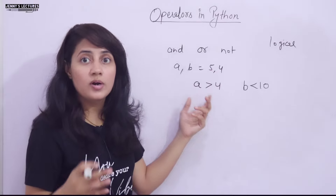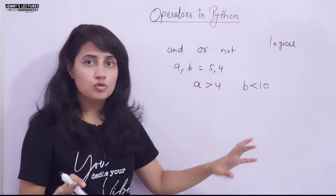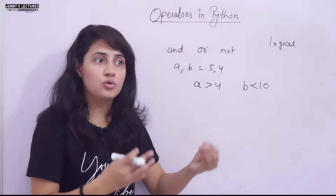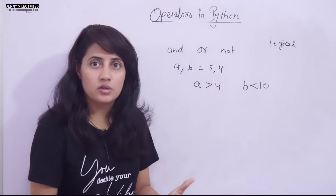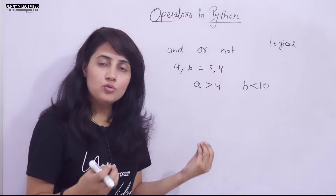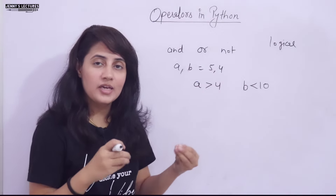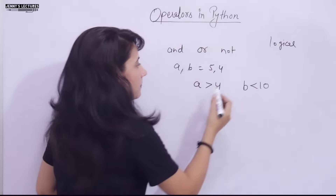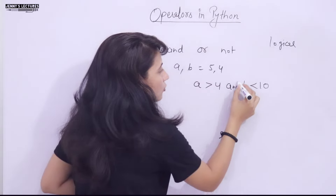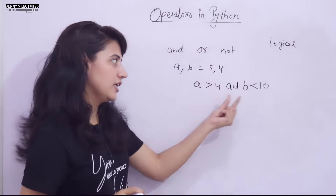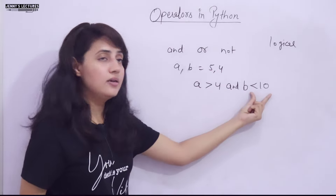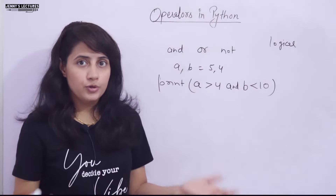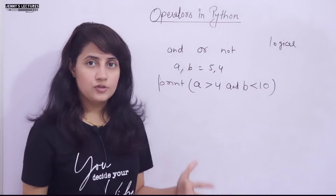So how can you write these two conditions in the same line in programming? You can use the AND operator. In Python, logical AND does exactly what we want. You can write: a > 4 and b < 10. Then if you print it, it will give True, otherwise False.